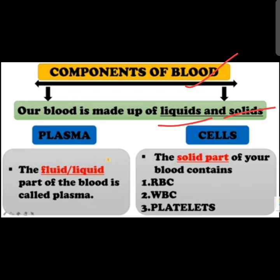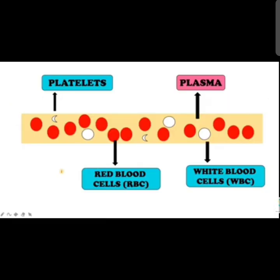Blood is made up of both liquid and solid parts. The liquid part of blood is called plasma. The solid part contains red blood cells (RBCs), white blood cells (WBCs), and platelets. RBCs are also known as erythrocytes, white blood cells as leukocytes, and platelets as thrombocytes. So blood has four types of components: plasma, red blood cells, white blood cells, and platelets.